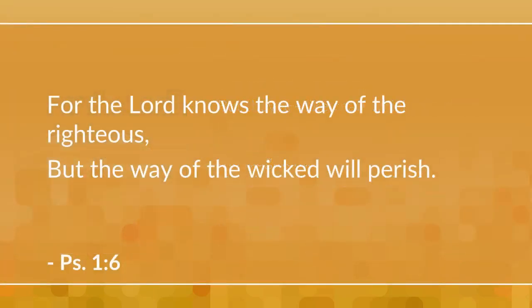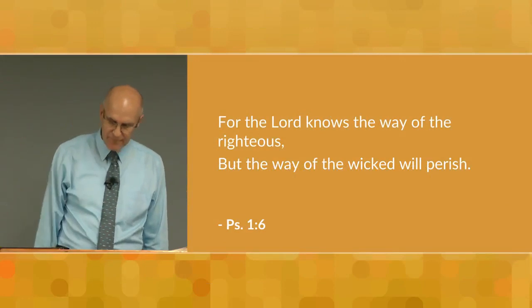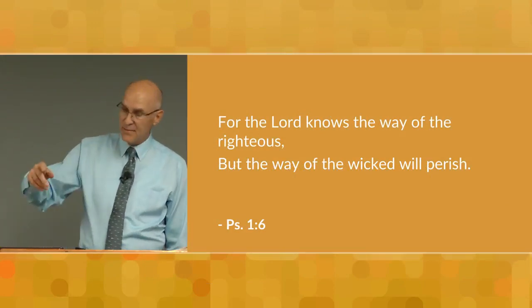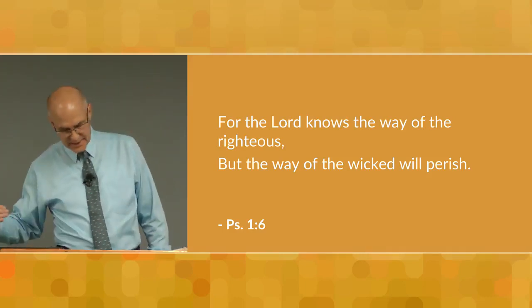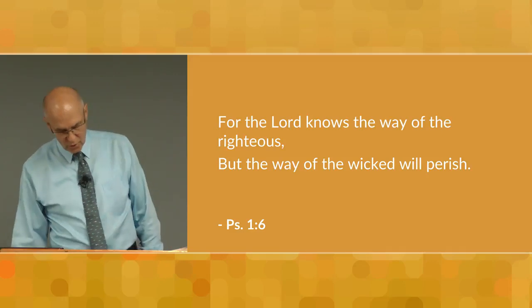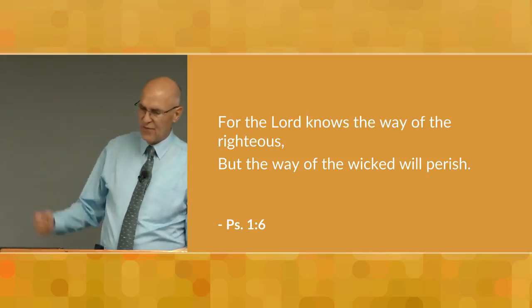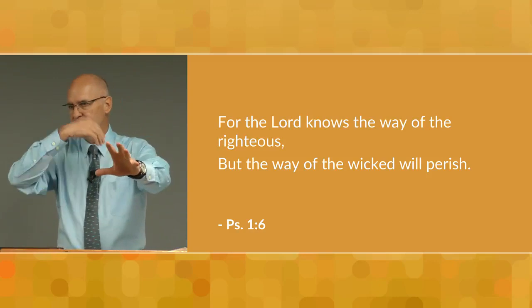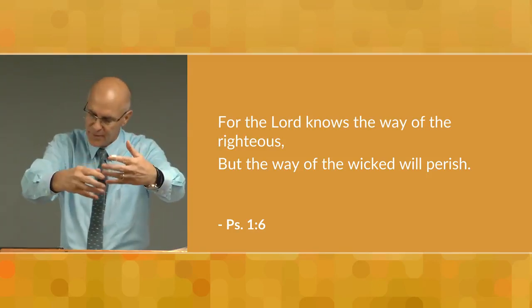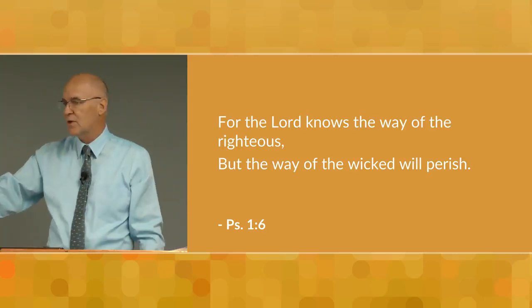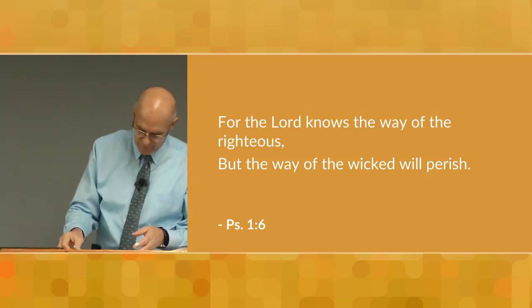Verse six — the final summation: 'For the Lord knows the way of the righteous, but the way of the wicked will perish.' God knows His own, He will punish the wicked, and He will bless the godly. This time there's antithetic parallelism, where the second stick's idea is contrasted to the idea in the first stick. The first stick: 'the Lord knows the way of the righteous' — by extension, He will judge them favorably. The opposite: 'but the way of the wicked will perish.' Antithetic — opposite.